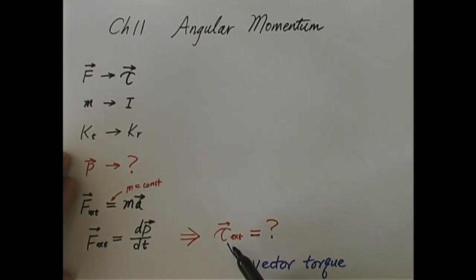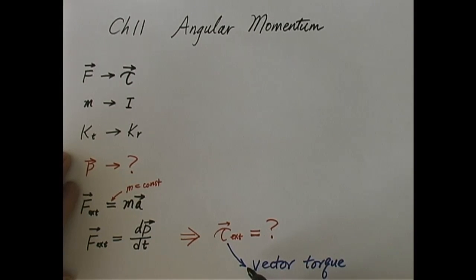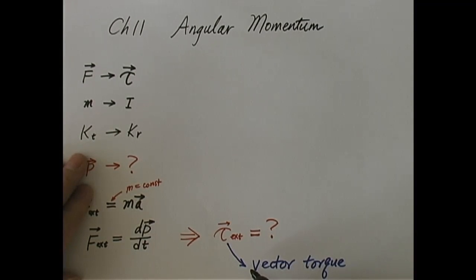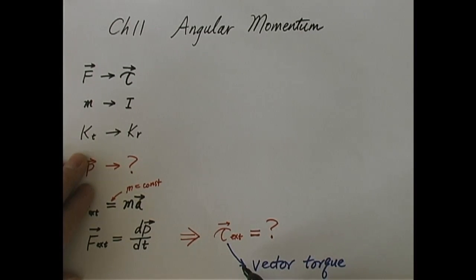So let us focus on this approach. We're going to first introduce torque as a vector. So far, the torque we studied in the previous chapter was not even considered a vector, because we didn't have to use the vector characteristics. Why? Because it's a rotation about a fixed axis. Therefore, there are only two possible senses of rotation — either clockwise or counterclockwise — so we can call one positive and the other negative.